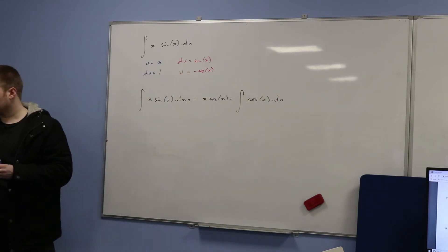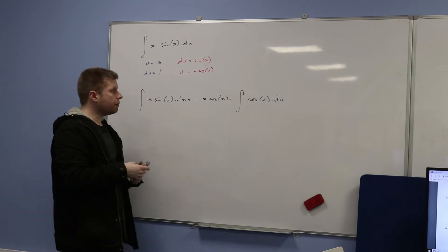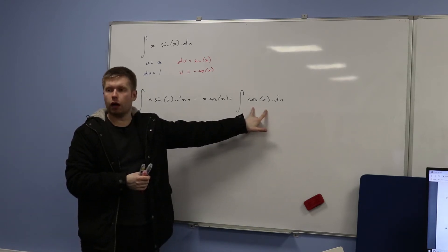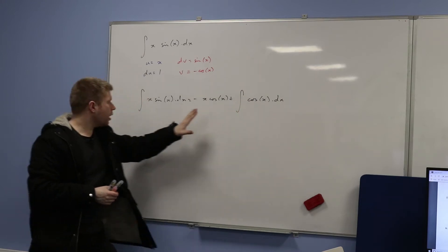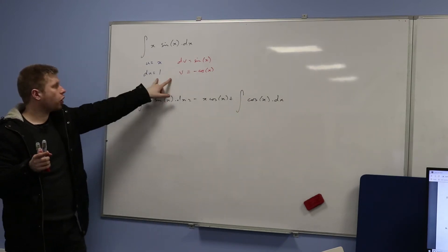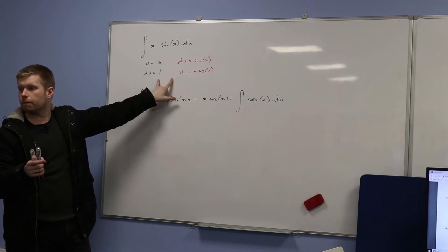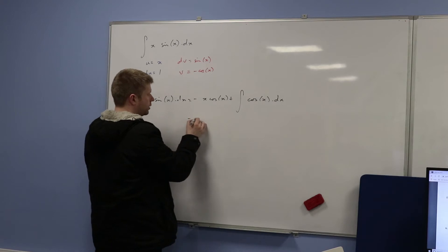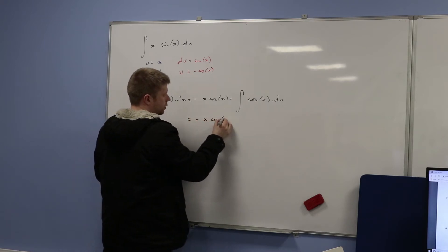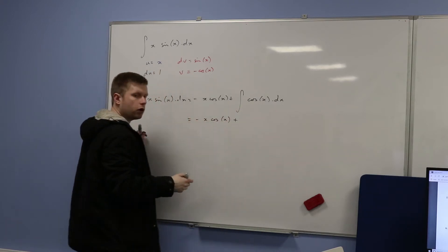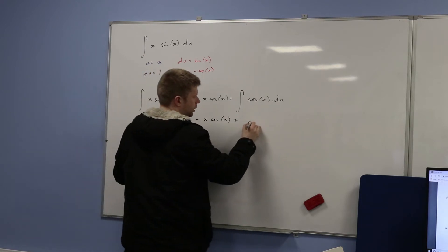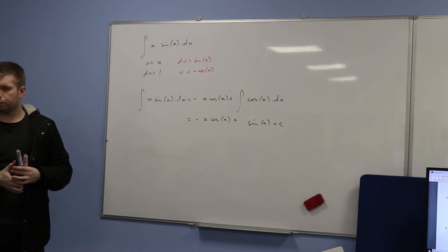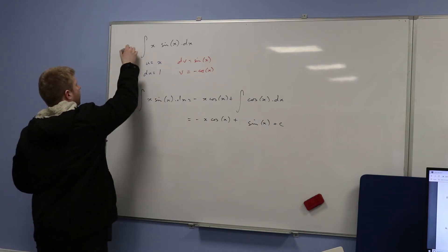This is what I mean: if you let it equal the wrong thing, the integral on the right-hand side in the by-parts formula will usually come out harder than what you started with. If that happens, just go back and swap over u's and dv's. So we get negative x·cos(x) plus — what's the integral of cos(x)? Sine x. So the answer is negative x·cos(x) + sin(x) + c. That's part two.